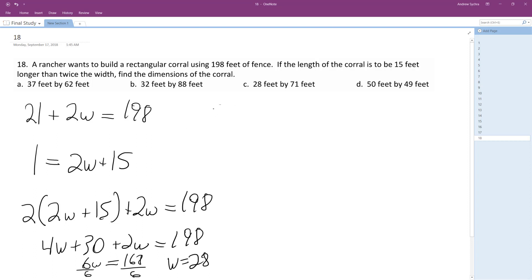So 2L plus 2 times 28 equals 198. 2L, got to be careful with L, not to get it confused as just a 1. So that's 56. That's 142, and then divided by 2, 71.